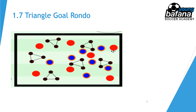Six triangular goals are placed across the field. Ideally these goals would be created out of discs, because when you use cones the ball can take a weird bounce or break the goal. The team in possession — red in this case — can score either by dribbling through one of the triangular goals for a point, or by passing to a teammate on the other side of the goal for a point.